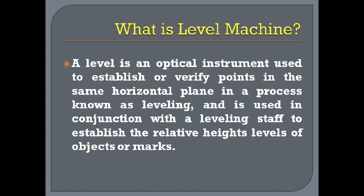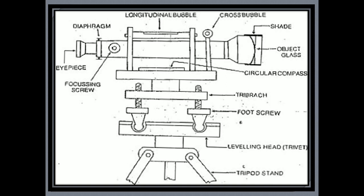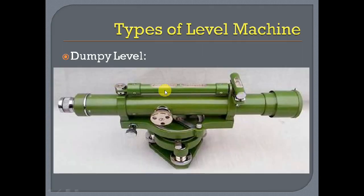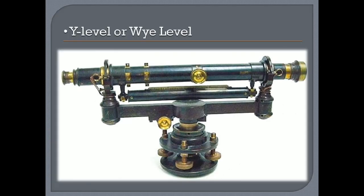There are different types of level machine. Now let us look at the types. The first is the dumpy level — in this level there are two bubbles on top of the tube. It has components including a longitudinal bubble, cross bubble, diaphragm, eyepiece, focusing screw, drive, and circular compass. These are the components of the dumpy level.